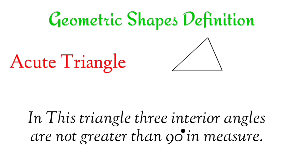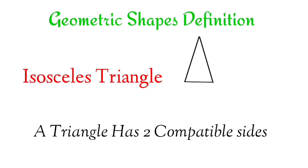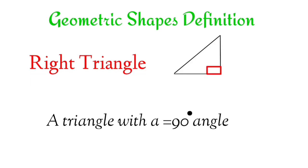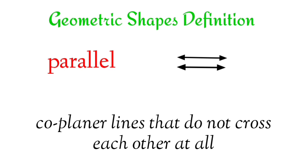Acute triangle: A triangle in which all three interior angles are less than 90 degrees. Scalene triangle: A triangle with three sides that are not equal to each other. Isosceles triangle: A triangle that has two equal sides. Right triangle: A triangle with a 90-degree angle. Perpendicular: Two coplanar lines that cross at a right angle. Parallel: Coplanar lines that don't cross each other at all.